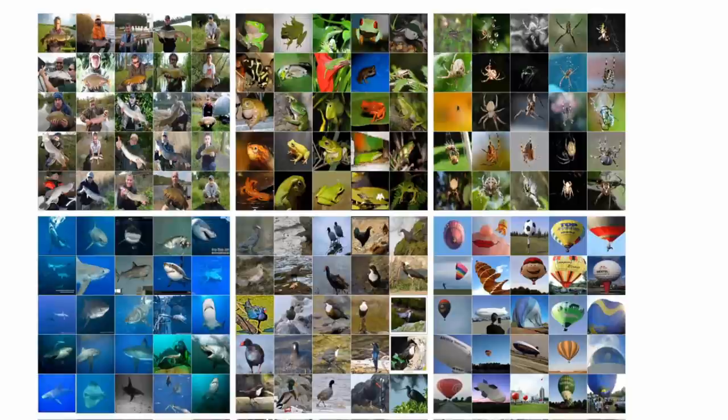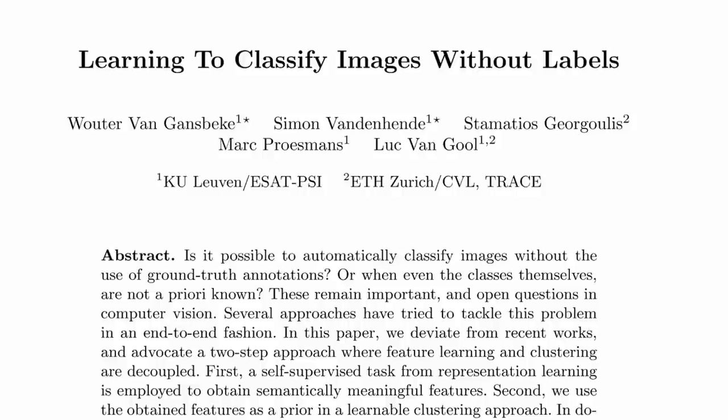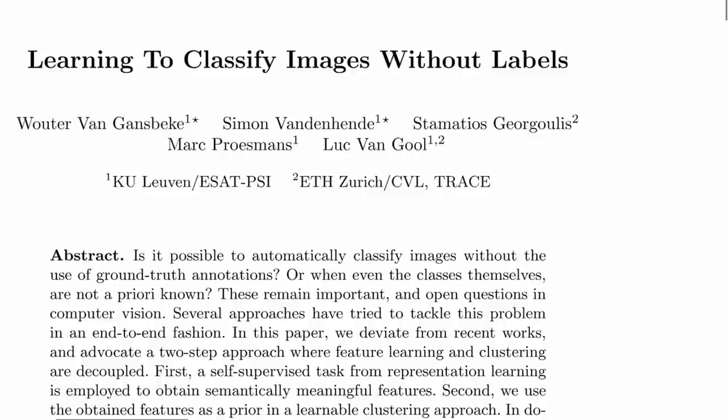This method doesn't use labels — it learns to classify images without labels. Today we're looking at the paper 'Learning to Classify Images Without Labels' by Wouter Von Gansbeke, Simon Vandenhende, Stamatios Georgoulis, Marc Proesmans, and Luc Van Gool. On a high-level, they have a three-step procedure: first, self-supervised learning to get good representations; second, a clustering step; and third, refinement through self-labeling.